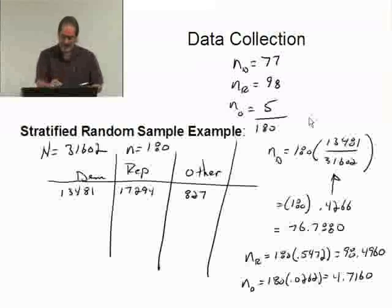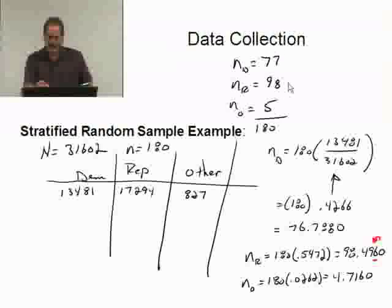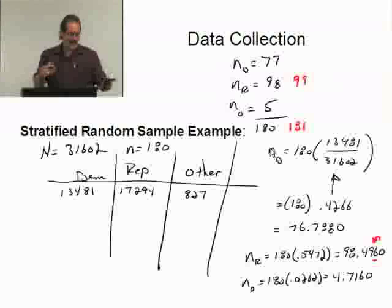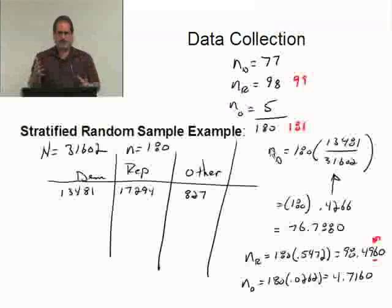That may not always happen. As an example, let's go back to the Republicans. If you'd have gone out here to round, this would have brought the 9 up, which would have brought the 4 up to 5, which would have brought me up to 99. In that case, I would have had 99 Republicans rather than 98. And I would have had 181 total rather than 180. Every now and then, that sort of thing can happen. What you want to do is when they don't add up to the number you're supposed to, which because of rounding, that can happen. You didn't do anything wrong. It's just that's the way it goes.